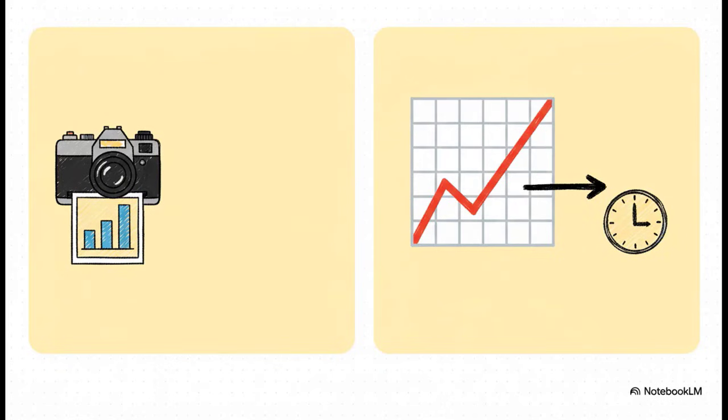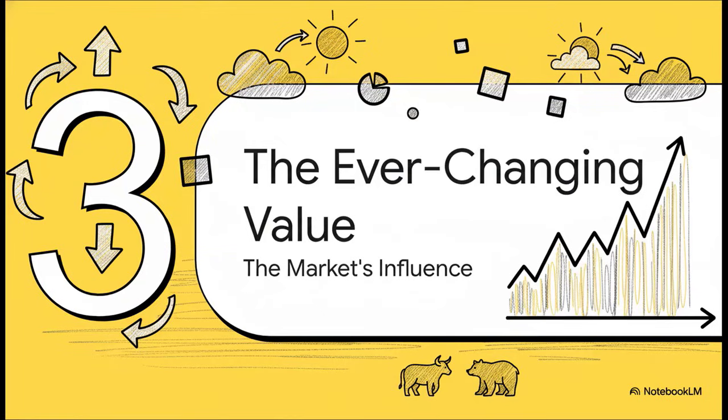Yeah, this really highlights the big difference. You can think of a basic company value as a single photo, a snapshot in time. But market value, that's a movie. It's a live stream. Because it's tied directly to that live stock price, it is always, always changing. So let's dig into that idea. The ever-changing value. This is probably the most important thing to get about publicly traded companies. Their value isn't carved in stone. Nope. It breathes and moves with the market.